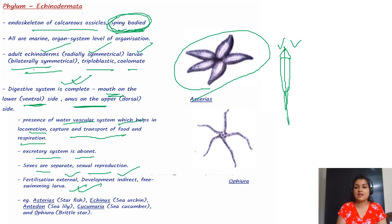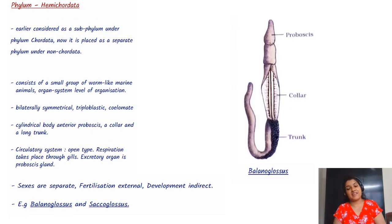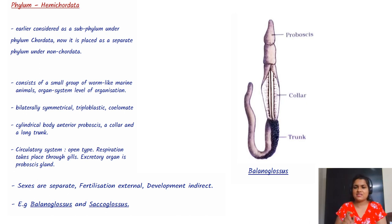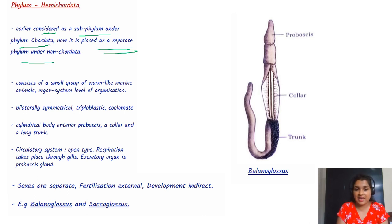Now, slowly we are coming towards phylum Chordata. But before that, there is a small phylum known as Hemichordata. It was earlier considered a subphylum under Chordata, but now it is placed as a separate phylum under non-chordates.